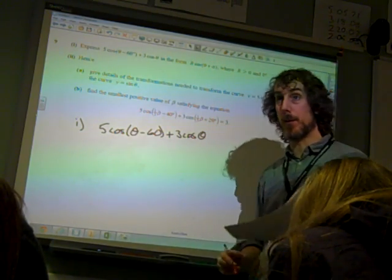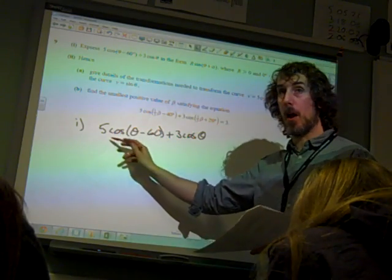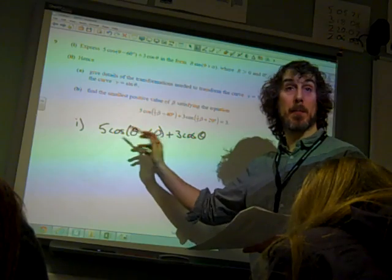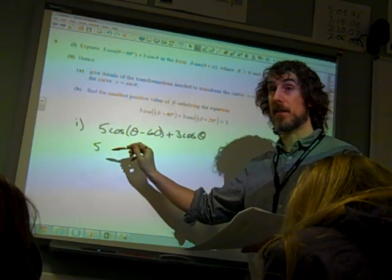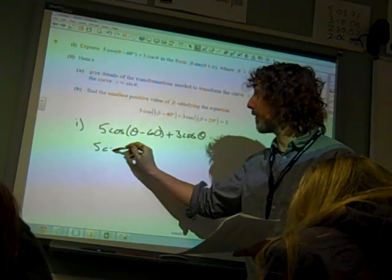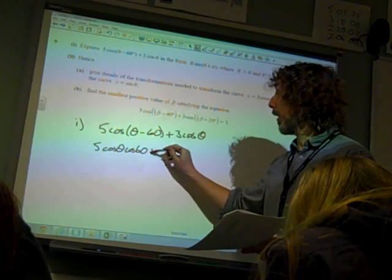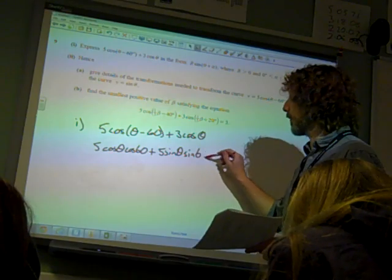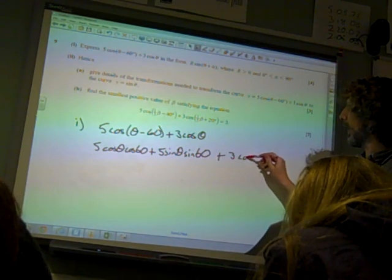So our first move with this is to unpick this cos(θ - 60). Now from the formula booklet, cos(θ - 60) is cos θ cos 60 plus sin θ sin 60. And it's multiplied by 5, so we've still got the 5 in there.